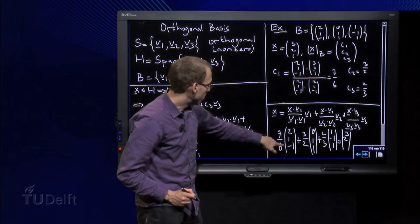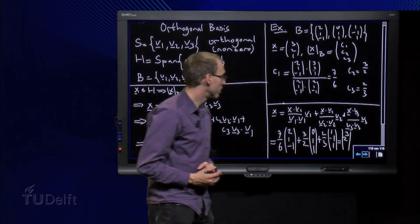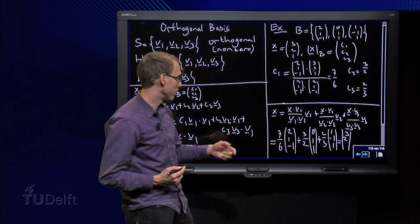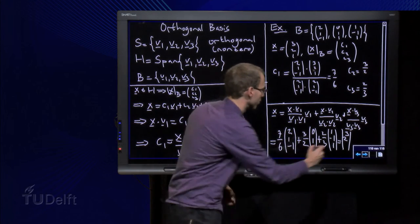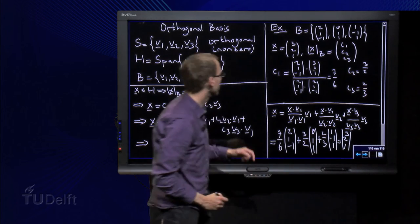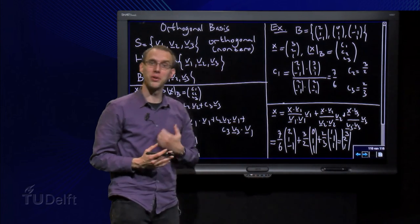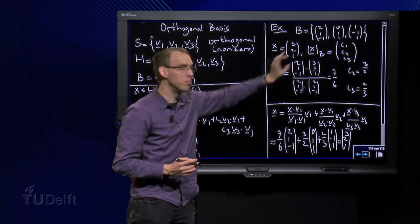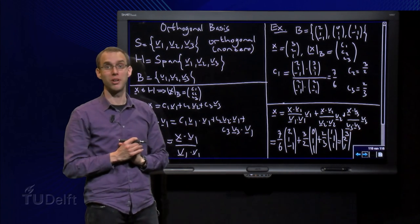And the last one, minus 7 over 6 plus 4 over 6 equals minus 3 over 6, so minus 1 half. 3 over 2 minus 1 half equals 1, and that's indeed equal to our original x. So that's the way how you can check whether you did not make any computational mistakes in the calculation somewhere.